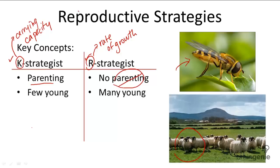K-strategists produce a few large young, whereas R-strategists produce many small young. Because K-strategists have an intensive parenting style, they can afford to produce few young because their young all have a high survival rate. But R-strategists give no parenting, so their young generally have a much lower survival rate — they have to produce many young to compensate for this low survival.